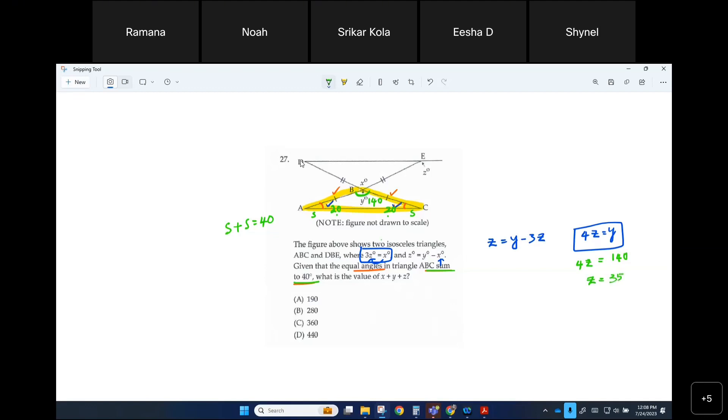If z is 35, can you figure out x? Yeah, you can figure it out. Okay, what is x? x would be 105.